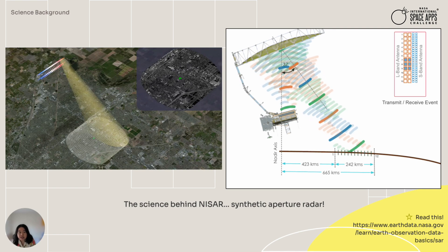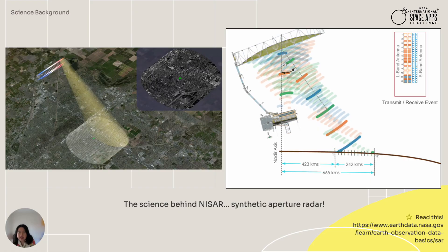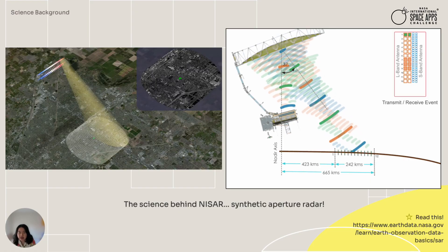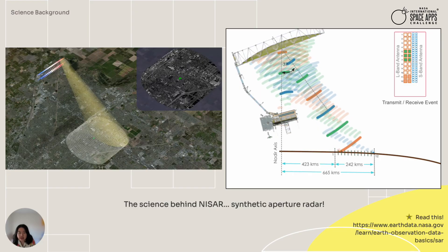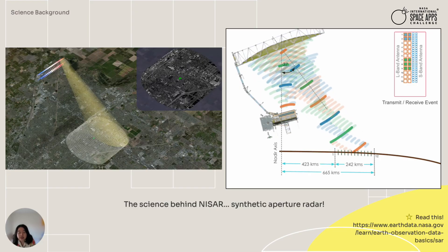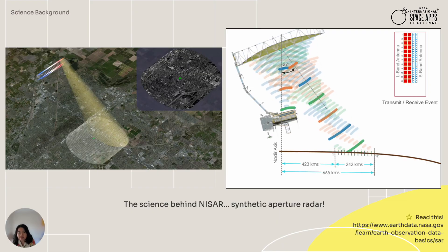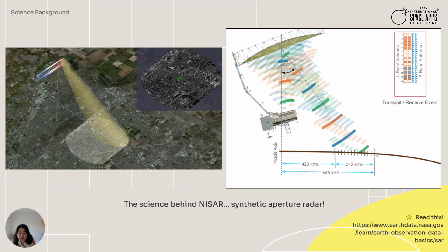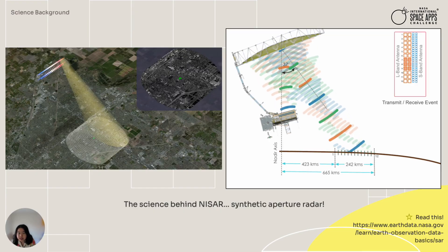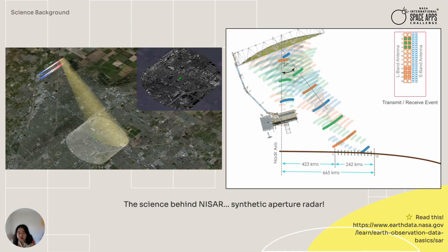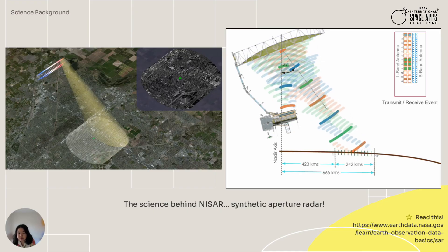SAR instruments send out a pulse of energy that reacts with the Earth's surface and is then reflected back to the instrument and recorded. SAR data can be collected day or night and even in cloudy weather, which allows for critical data collection during disaster events like oil spills and floods. Please check out our resources link for more information on backscatter, polarizations, and frequencies, and for more details on which SAR datasets would best fit your project.